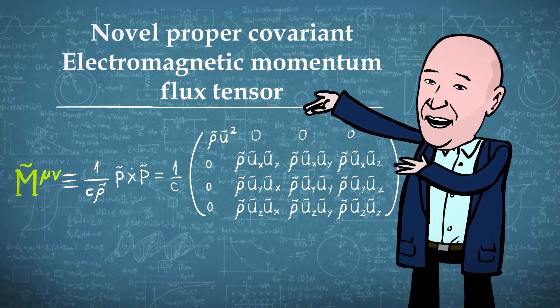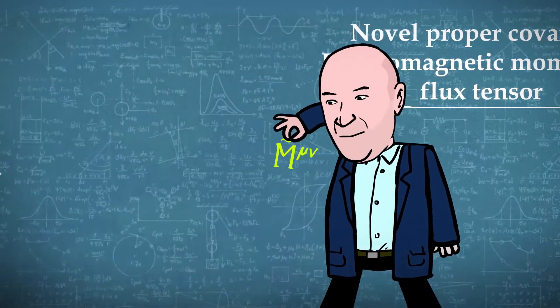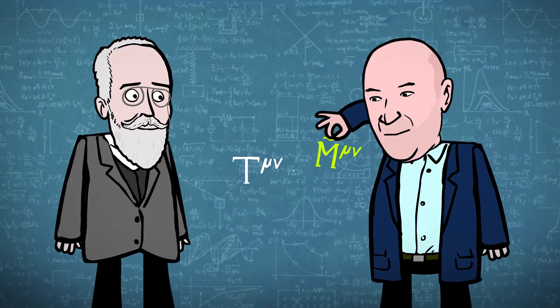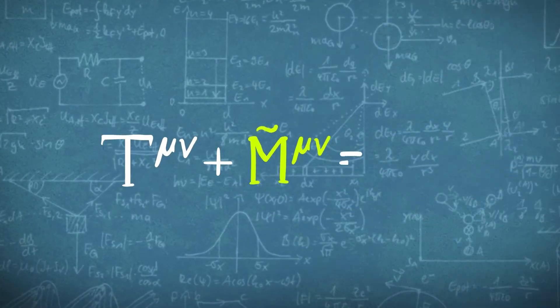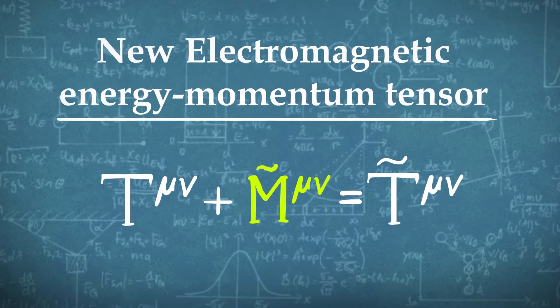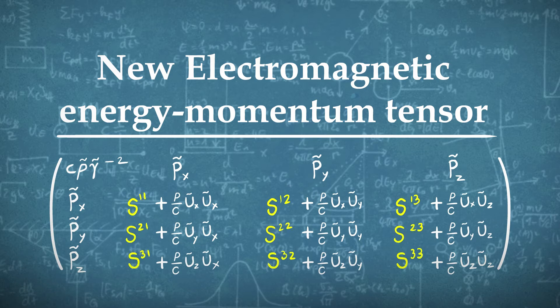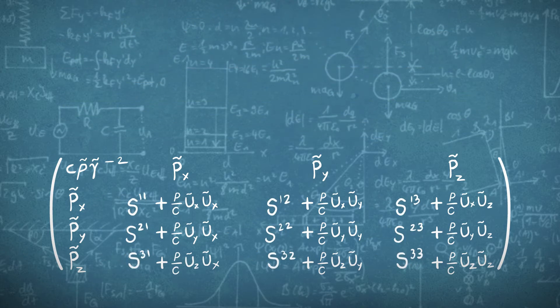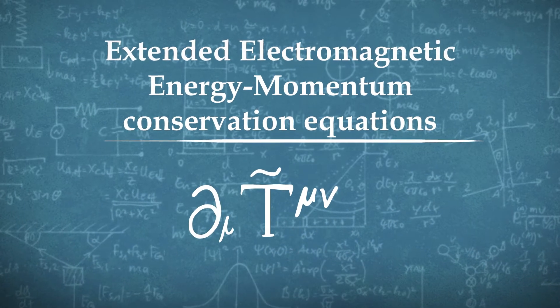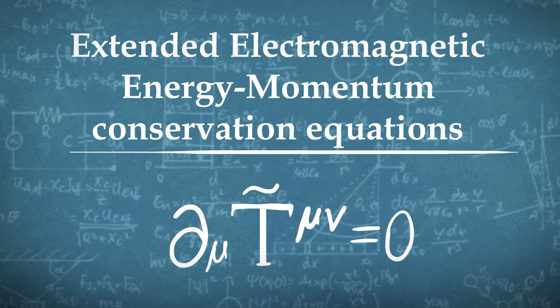Using these new definitions, we define a novel proper covariant electromagnetic momentum flux tensor. Combining Minkowski's tensor T and this new momentum flux tensor M gives the new electromagnetic energy momentum tensor. In tensor form, the SIJ are the known Maxwell stresses, and the divergence gives the new extended electromagnetic energy momentum conservation equations that include the momentum flux.